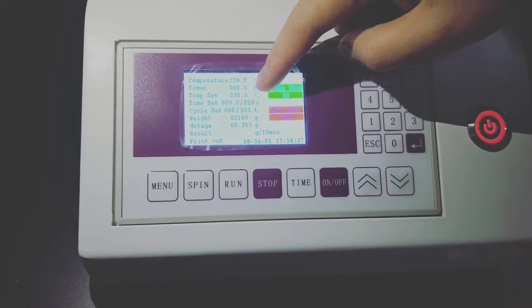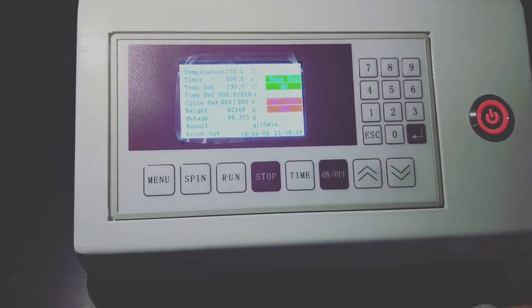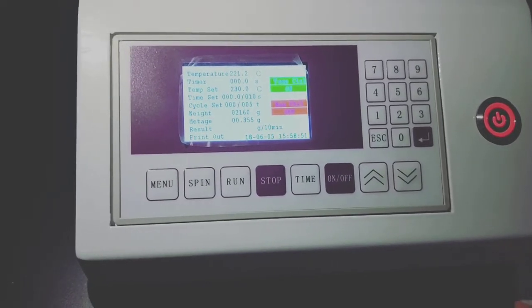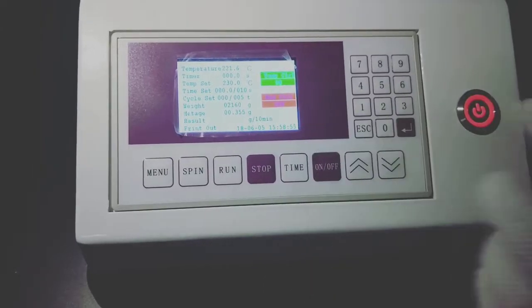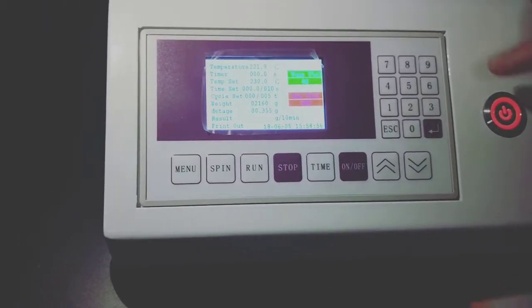And this time set is used for automatically cutting every 10 seconds. If the melt flow index value is small, we can set this time a little bigger, like 20 seconds or others.